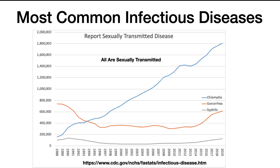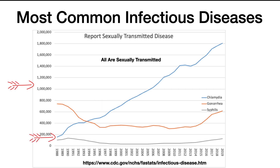Now we move on to one of the most common infectious diseases. If you report the number of sexually transmitted diseases over time, you can see that chlamydia has risen almost tenfold since 1988. The blue line shows the year on the bottom axis and the number of reported cases. It starts at around 180,000 and is now, in 2019, up to 1.8 million cases per year.